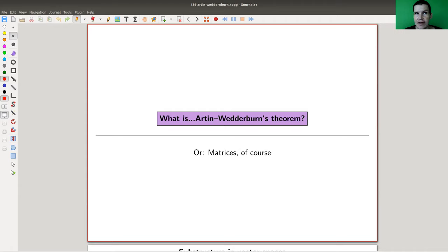So I'm going to talk about a theorem which goes under various names. Sometimes it's the Artin-Wedderburn theorem, sometimes it's the Wedderburn-Artin theorem, and sometimes it's the Wedderburn theorem. I go with the name Artin-Wedderburn theorem, and it's essentially about matrices.